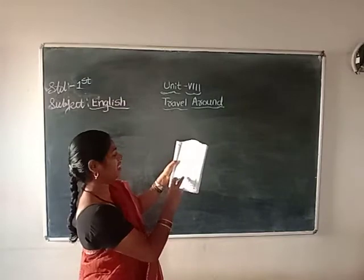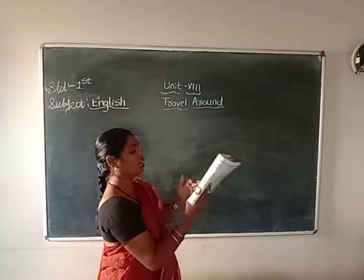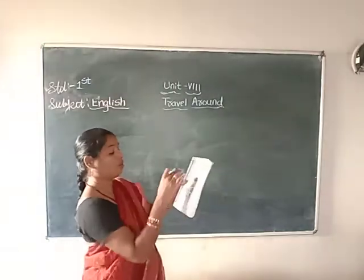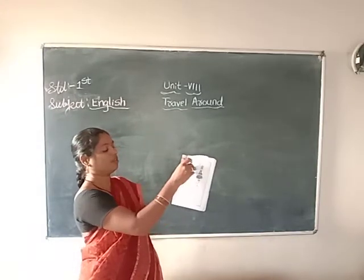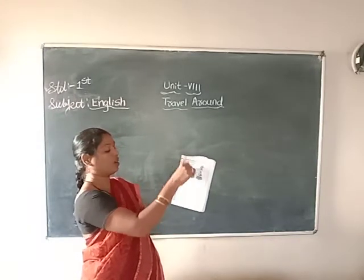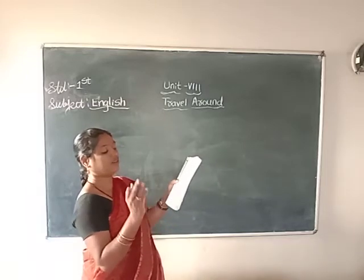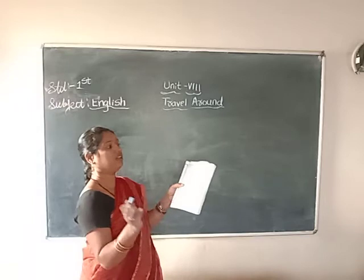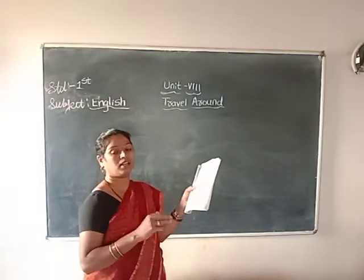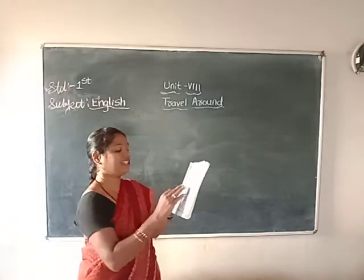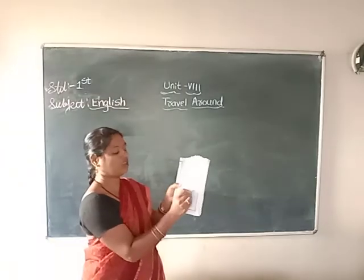In page number 99, they have given some pictures. You have to match them. Wheel means - this is the picture of the bus - wheel, so you have to put the line. Wiper - wiper means it is in front of the vehicle, it washes out the water, rain water, on the glass. That is called wiper. Here, the picture is there, you have to match.